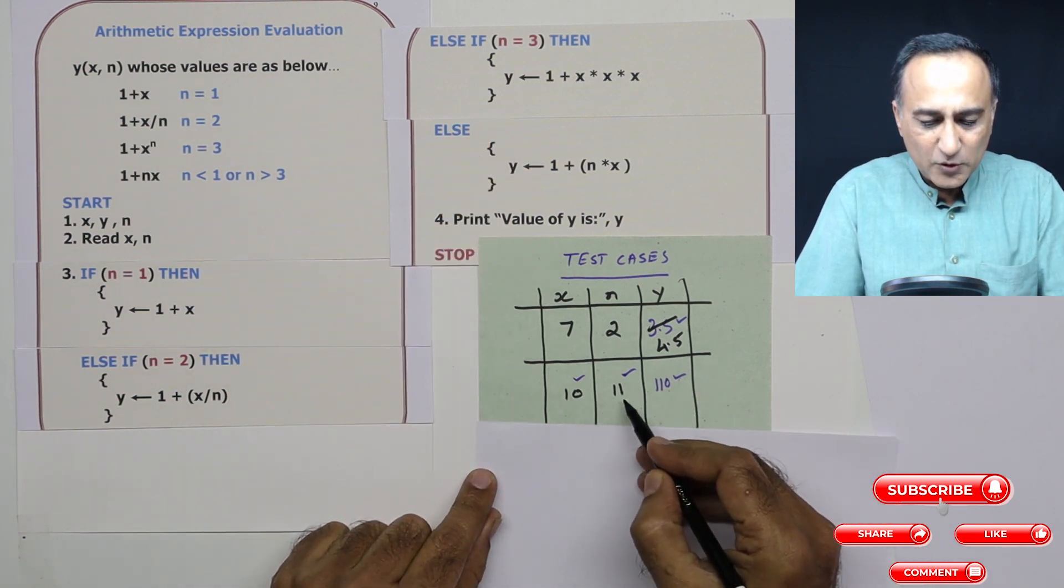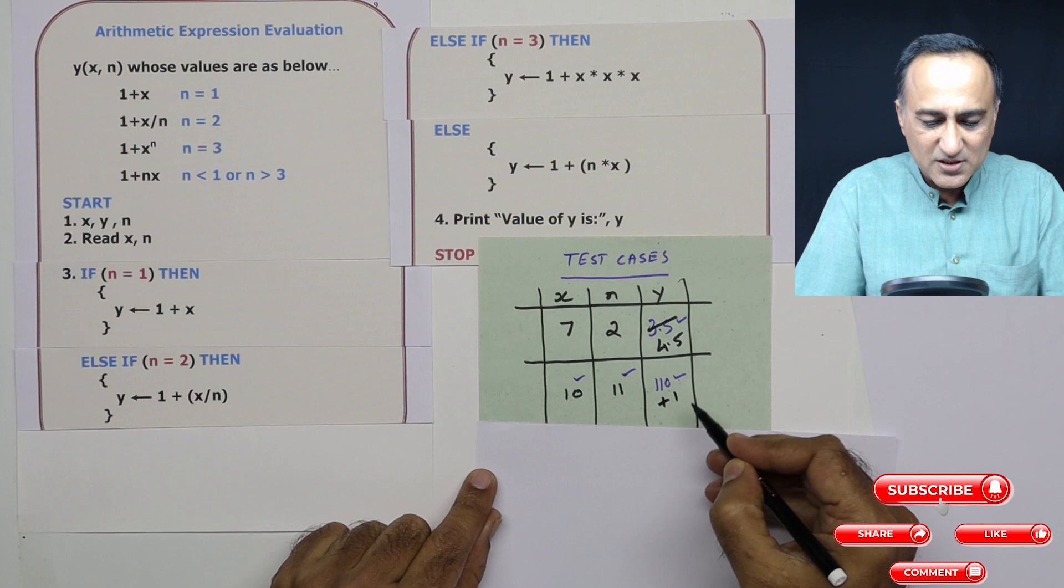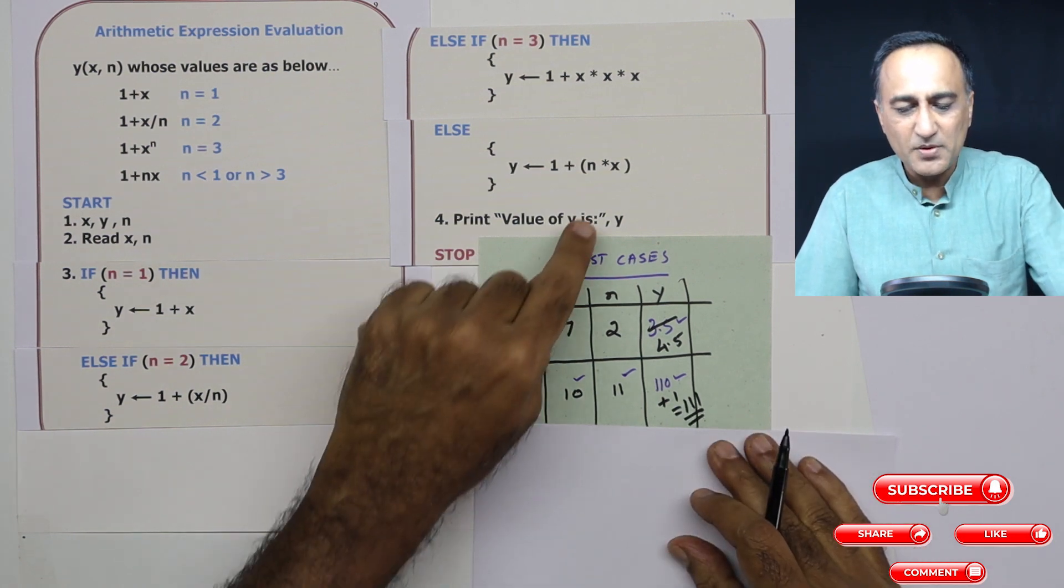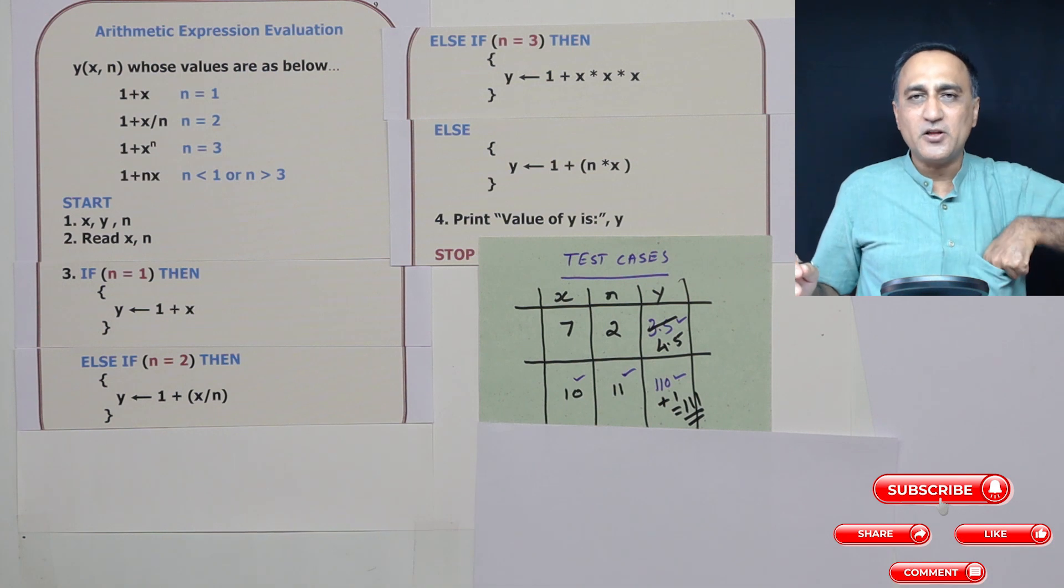Now this is 11 into 10 is 110. Again, I missed this, so it should be 111. So 111 will be the value of y, which will be printed on the output screen.